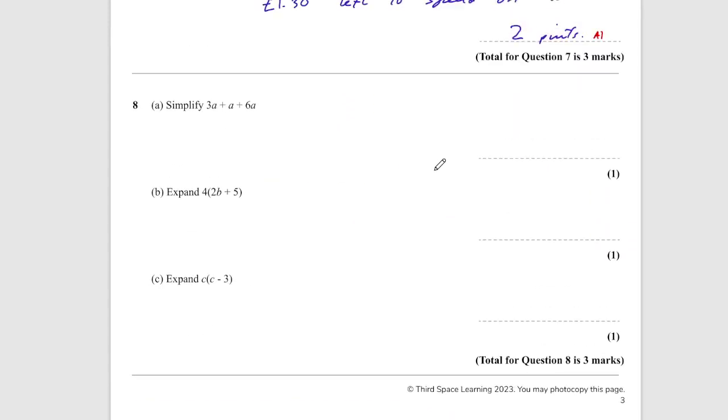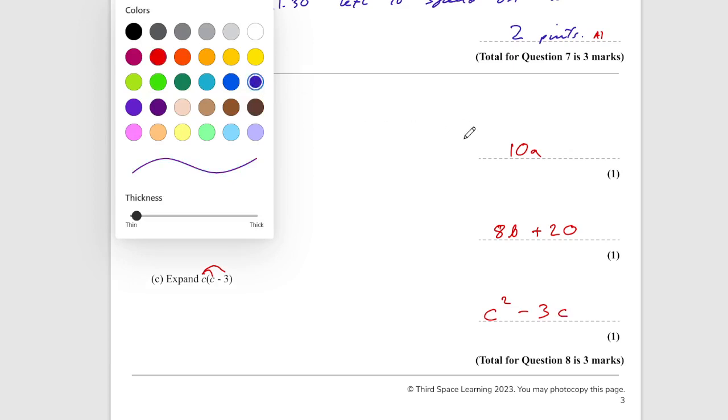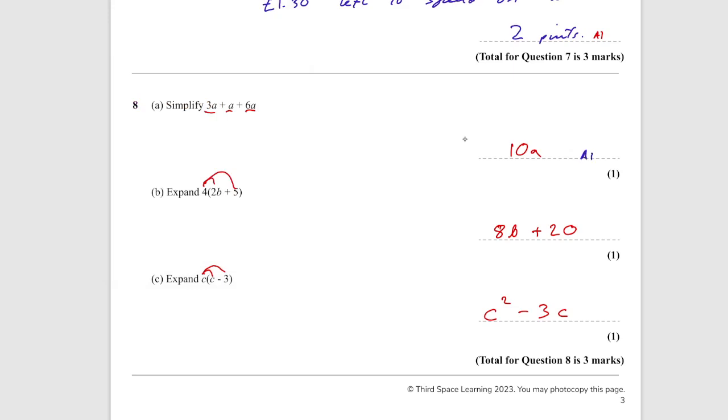Question 8. Simplify. We're collecting our A's together. Three plus one plus six is going to be ten. So, 10A. Expand. Four times by 2B would give you 8B. And then four times by five would give you 20. So, 8B plus 20. And then for the final one, expand. C times by C gives you C squared. And then C times by minus three gives you minus 3C. The marks are awarded for this question: we're looking at A1, A1, and A1. So, three A marks.